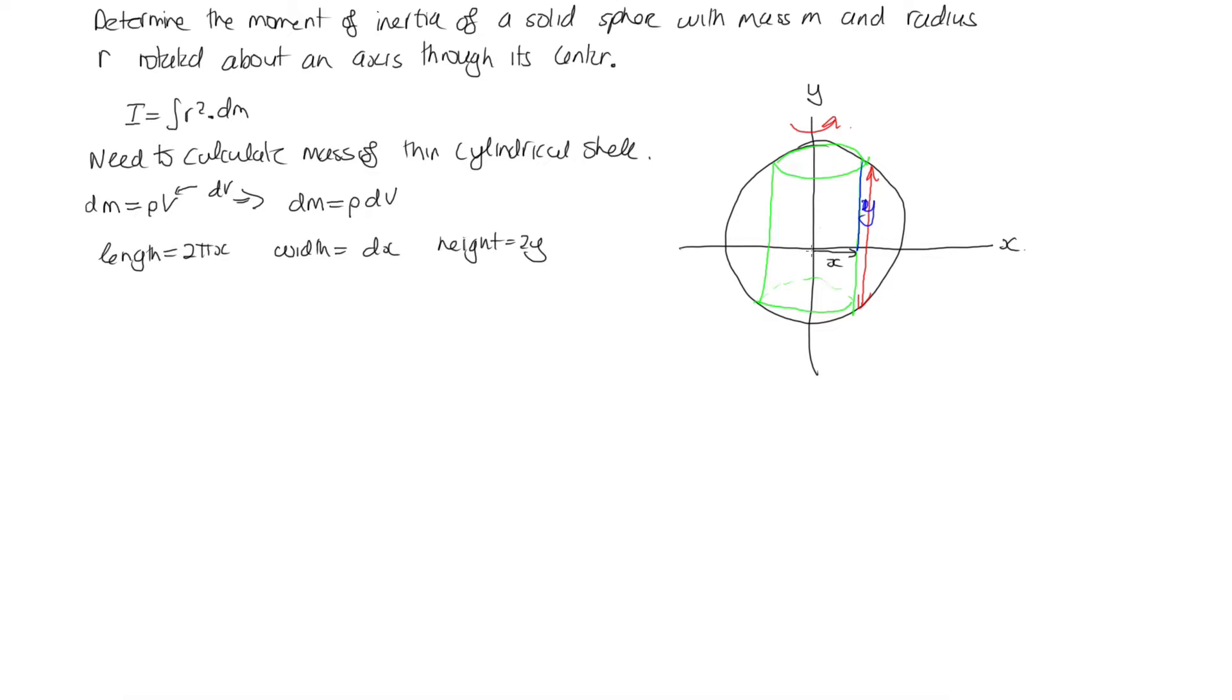But we can get it in terms of x if we remember that this is a sphere. So this is r here, the distance from the center of the sphere up to this point on the edge of the sphere. So we can now write, well, r² is equal to x² plus y². And so that tells us that y is equal to the square root of r² minus x². So this tells me that my height is equal to 2 times the square root of r² minus x².